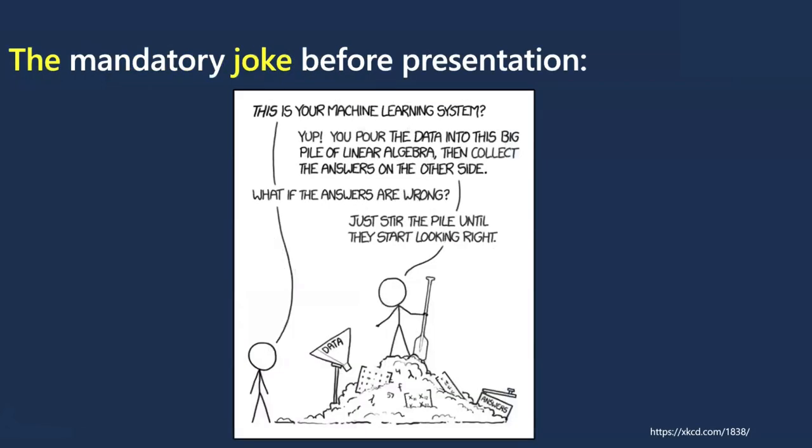Every talk begins with a joke. Person A asks person B — probably a data scientist or machine learning engineer — about their machine learning system. Person B says you pour a lot of data into this big pile of linear algebra, and then it collects the answers on the other side. It's like a funnel: you pour data, it goes through linear algebra, and you get an answer.